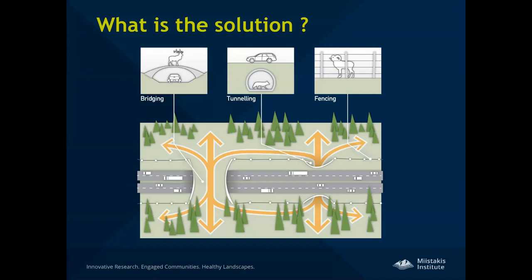The great thing is we have a solution to this problem. There are different mitigations that can help wildlife cross roads safely and reduce safety risks to humans. These include overpasses or bridges that go over top of highways, tunnels or underpasses that go under highways, and associated fencing which keeps animals off the highway and can direct them to these crossing structures.